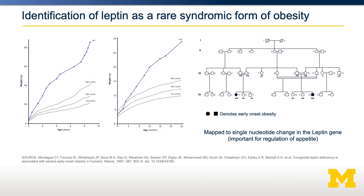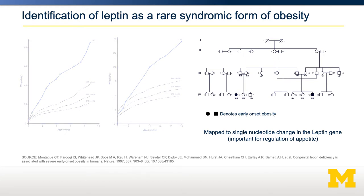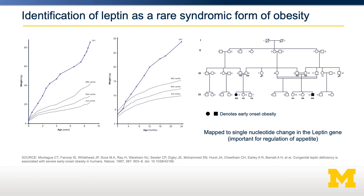Let's go through the example of leptin. Leptin was identified from a pedigree family looking at a very rare syndromic form of obesity. Individuals OB1 and OB2 had extreme early onset obesity — their growth trajectories are graphed, with dashed lines indicating the 2nd, 50th, and 98th centiles. As you can see, OB1 and OB2 gained substantially more than even the 98th centile of weight.